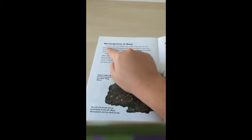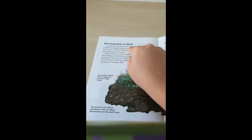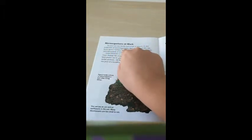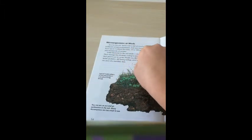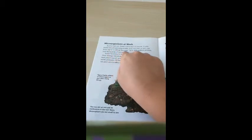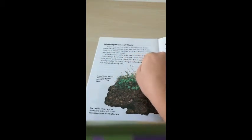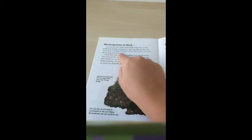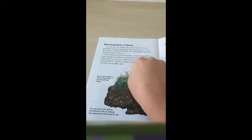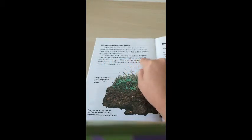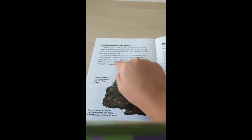Microorganisms at work. As you can see, fertile soil is full of insects. It also holds lots of microorganisms. Just one liter of dirt can have up to 1 trillion bacteria, 10 to 100 million protists, and thousands of worms. Some bacteria in the soil make a natural fertilizer. They change the element nitrogen into a compound that plants use to grow.